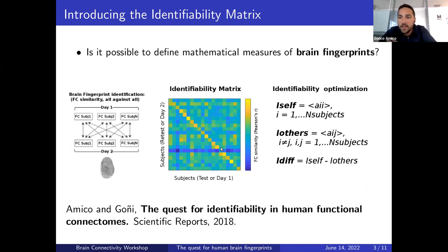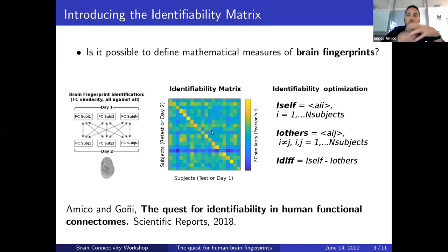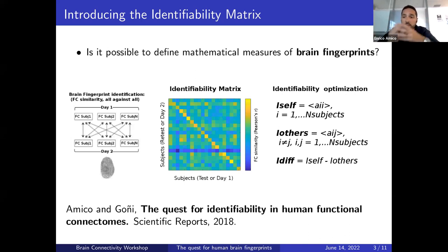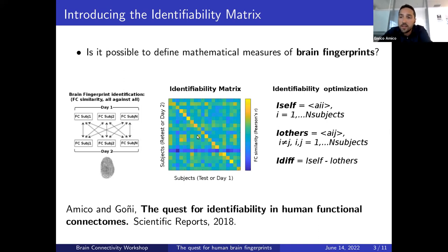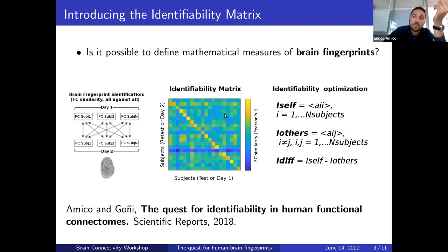That was the original formulation, but you can be creative — you can z-score this value or find more advanced optimization functions. The key idea is that you want the main diagonal to stand out as optimally as possible from the off-diagonal elements.